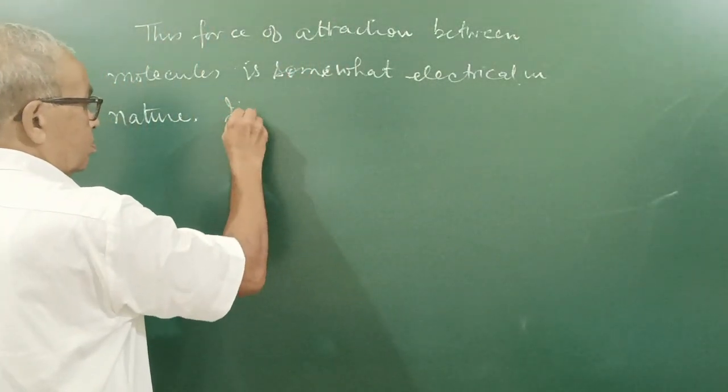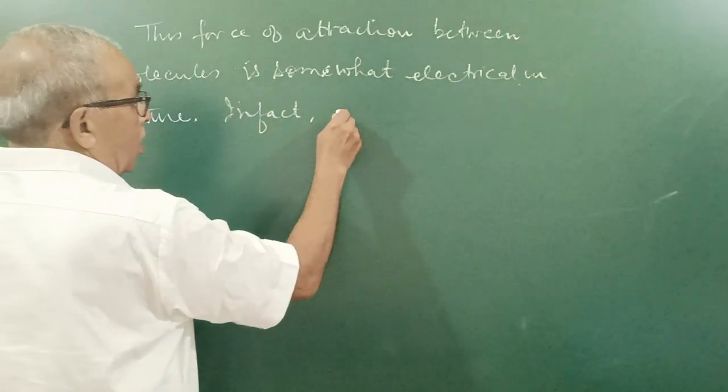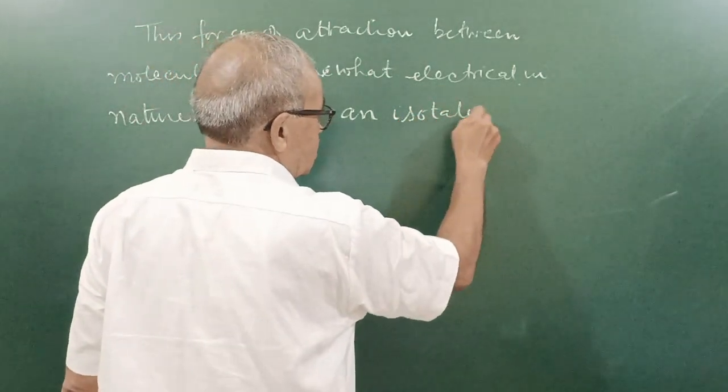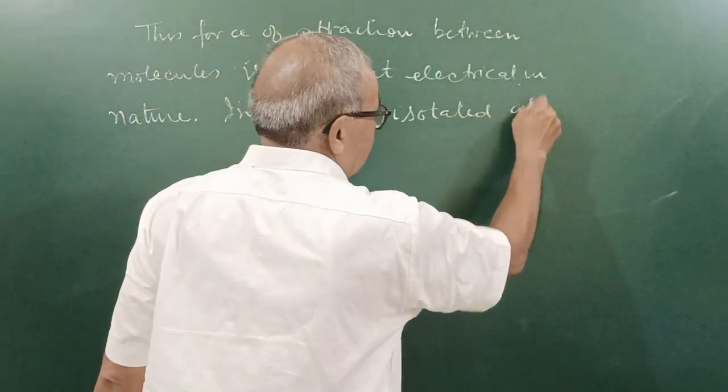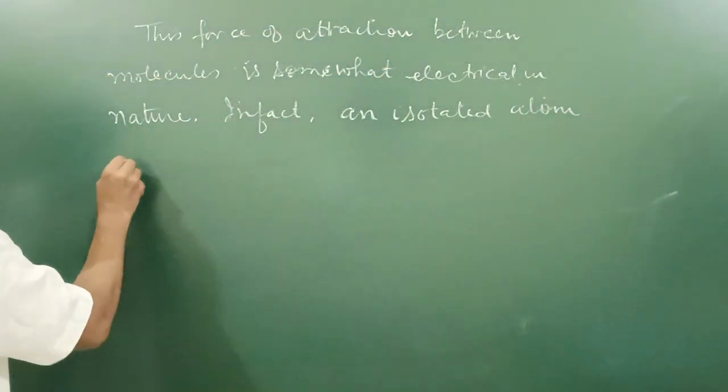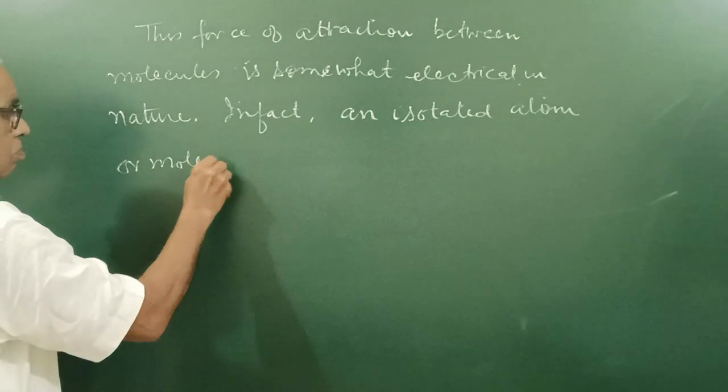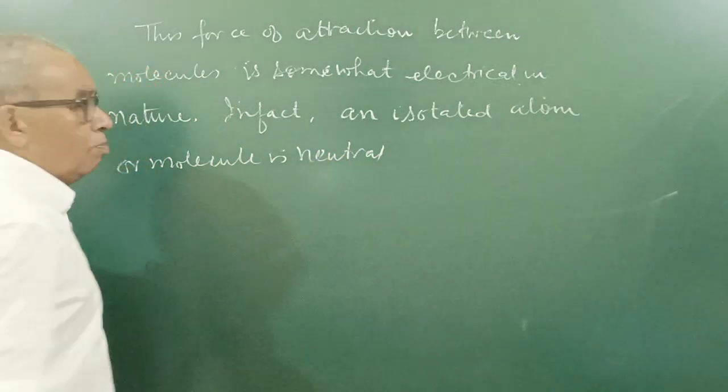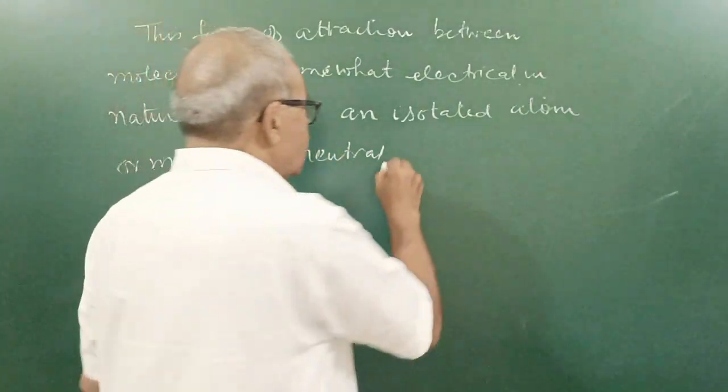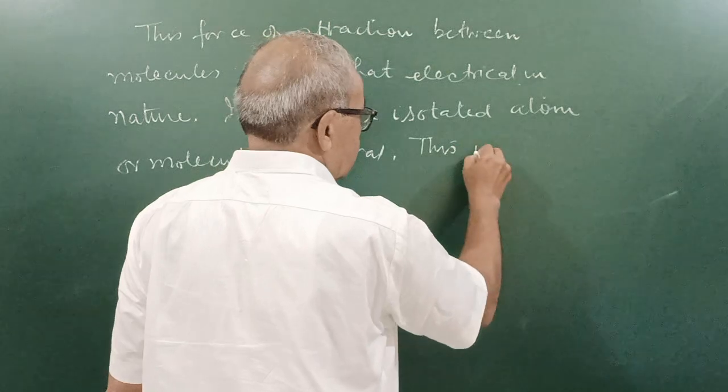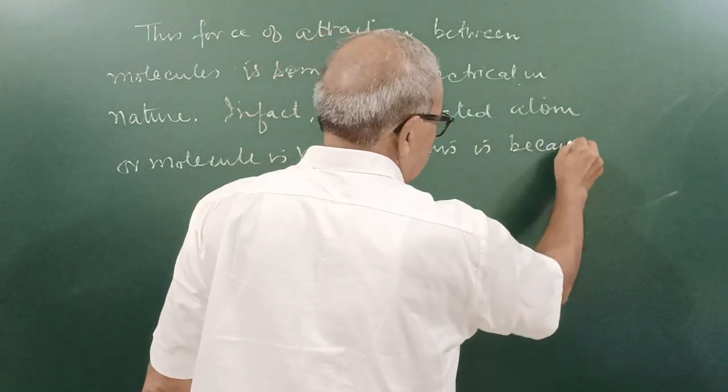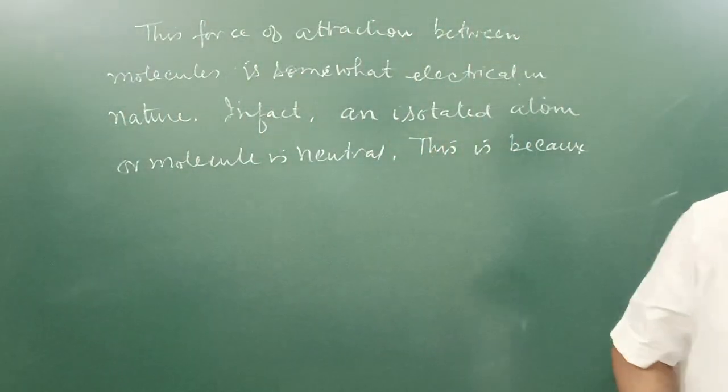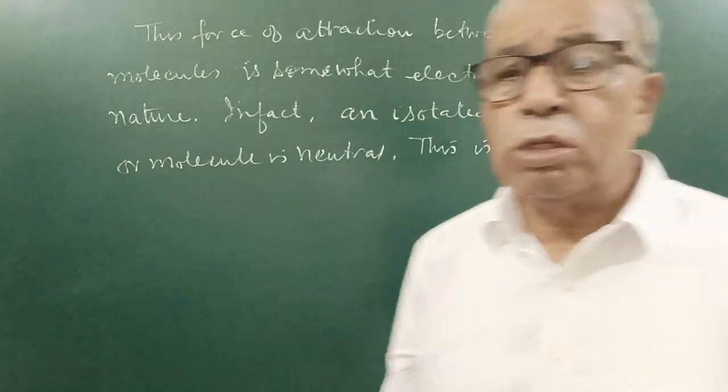In fact, an isolated atom or molecule is neutral. It means there is no charge. Why? This is because, you know, atom has electron inside, proton in the nucleus, and number of electrons is equal to number of protons.